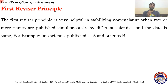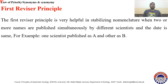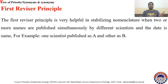The First Reviser Principle applies when two or more names are published simultaneously by different scientists on the same date. Previously we discussed different conditions where names were published — either similar names for one taxon or similar names for different taxa. Under the Law of Priority, the name first published is the valid one. But here the case is different because the date of publication is the same — they were published simultaneously.